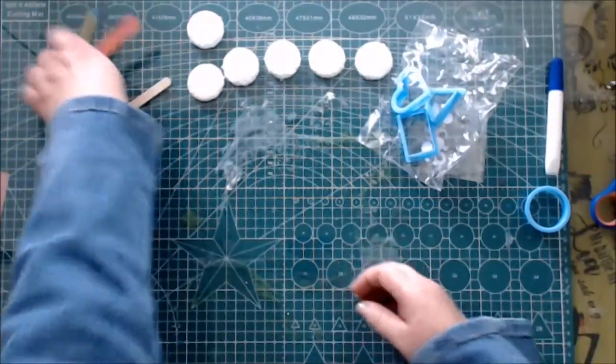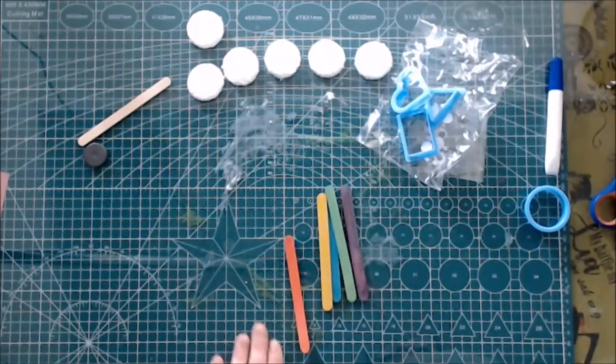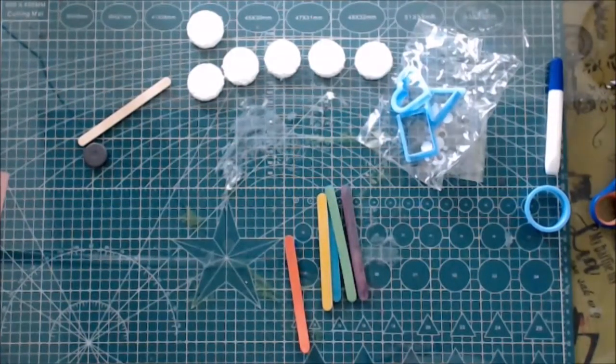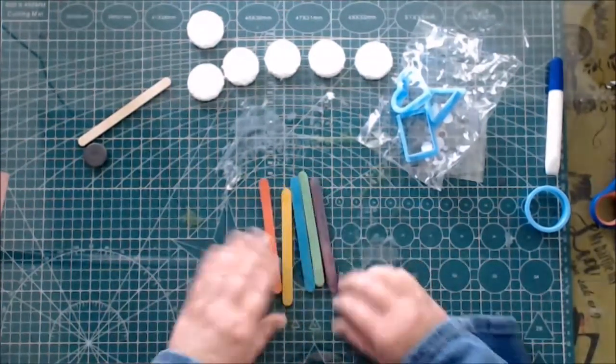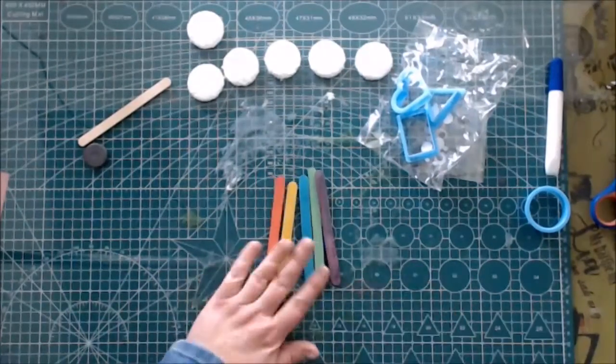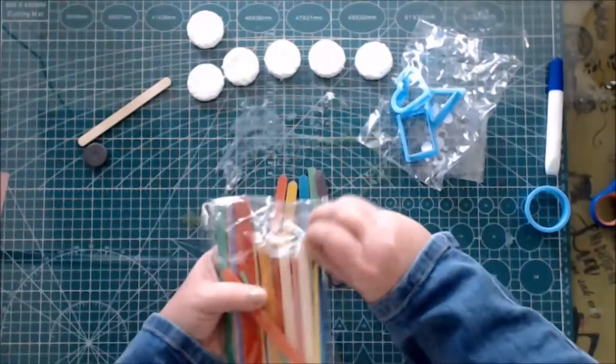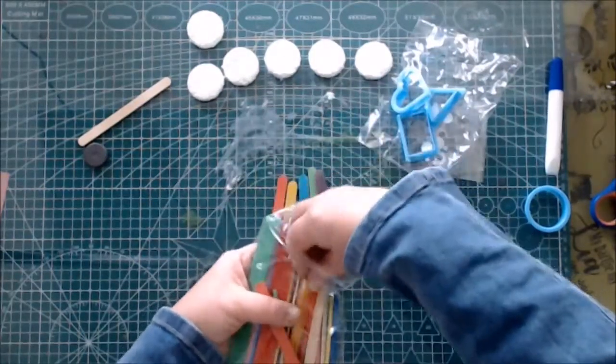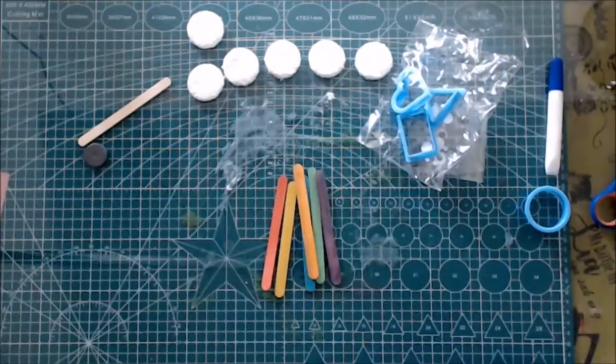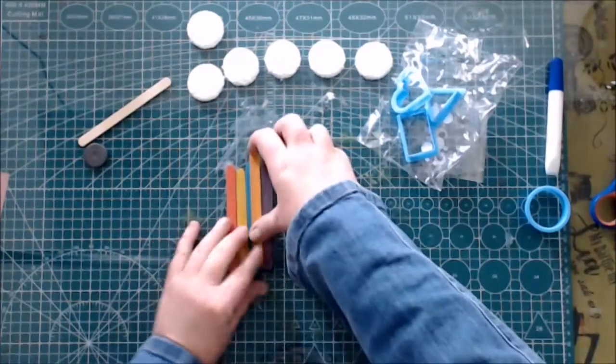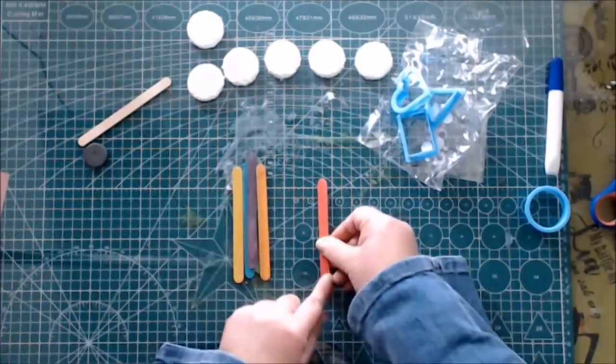Now we are going to put our popsicle sticks together in the colors of the rainbow. But because we are going to put the magnet on the back, we are going to work in the reverse side. So I forgot about the orange popsicle stick. Silly me. Please take out the orange popsicle stick as well.